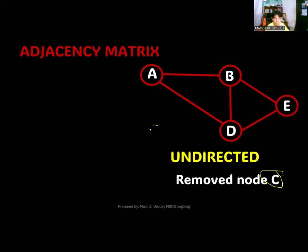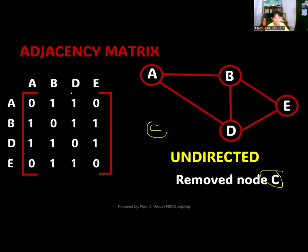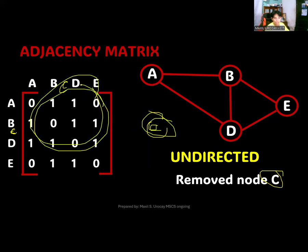You already removed the C right here. In your matrix, it will become like this. You don't have the C vertex rows and columns already since your vertex is not here. That's why you will not include the C in here since that does not belong to the matrix already. You will automatically remove the row and the column of that specific vertex.